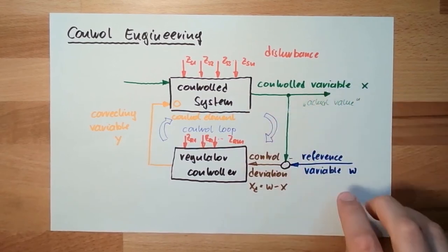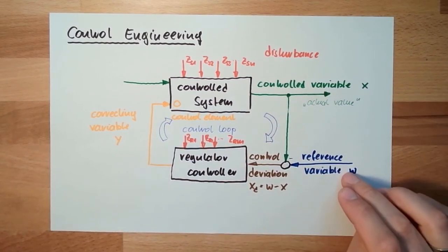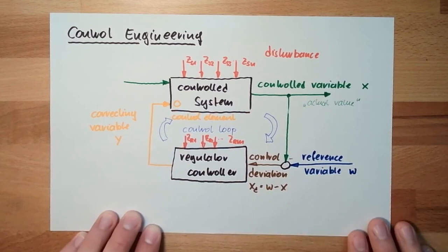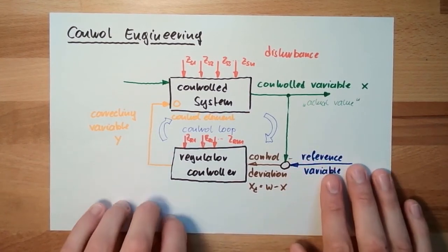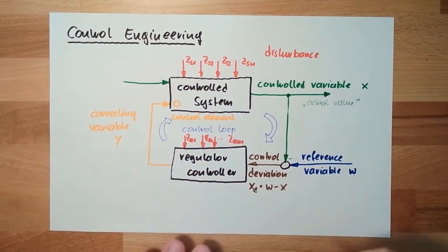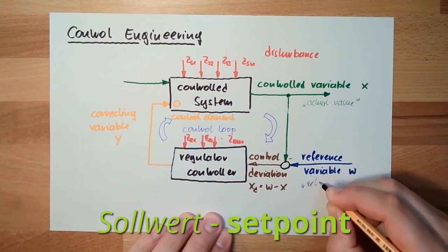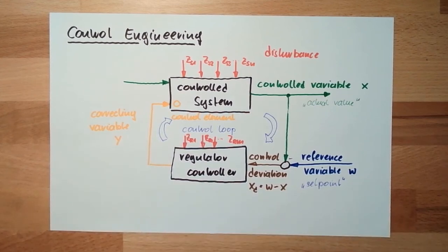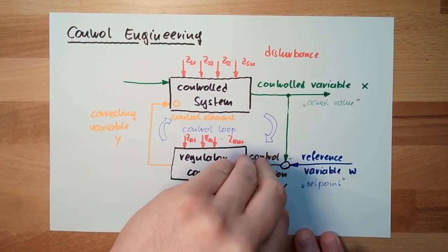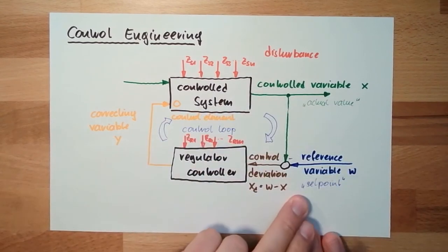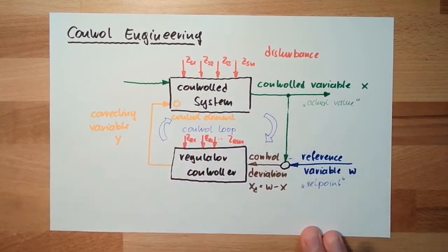The actual value is compared to the reference variable. The reference variable may also change over time — it is the continuous thing. What is the value right now, at this point in time, is called the setpoint. The deviation is calculated at one point in time from the actual value and the setpoint. Reference variable is the continuous thing; setpoint is what is right now.